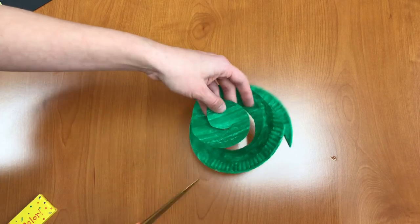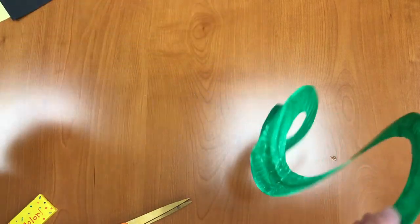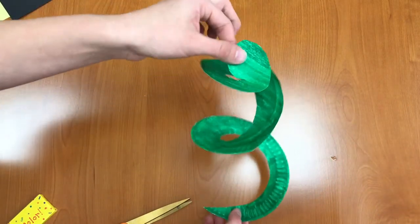And the more of a spiral that you get, the better your twirler is going to twirl. So there we go. Now we have a paper plate cut out in a spiral.